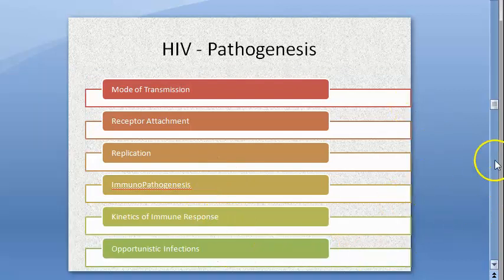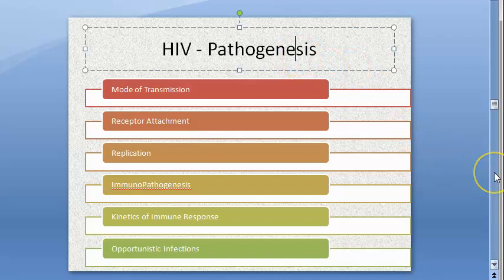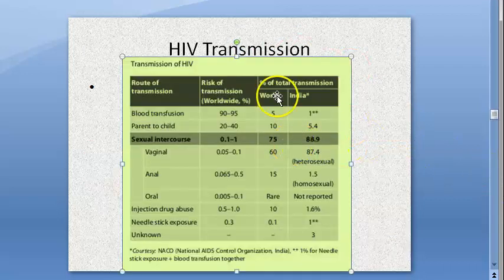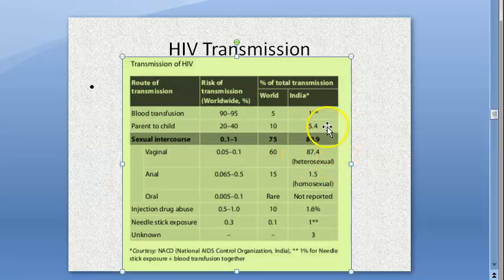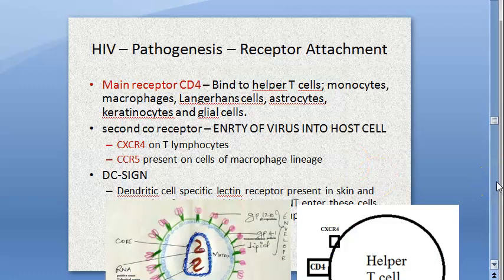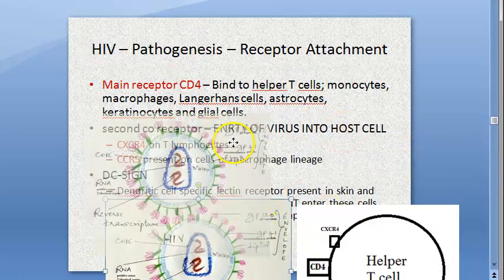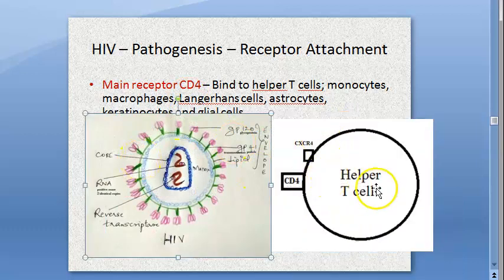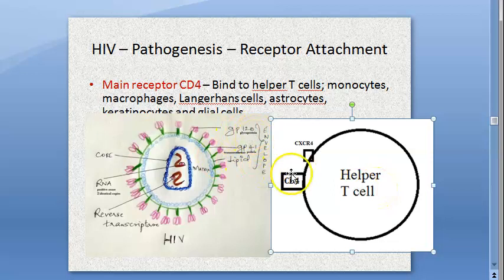In India, the maximum transmission is due to sexual intercourse — 88% is because of sexual intercourse. That is why there is a stigma to it, and also there is no cure, which makes the stigma around HIV extreme. The virus binds via GP120 to the CD4 and CXCR4 receptors on the T helper cell.